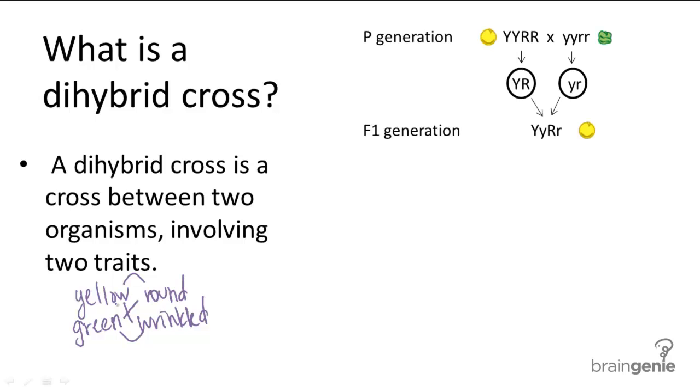Here are Mendel's peas. Mendel began with a homozygous dominant and a homozygous recessive individual in the parent generation. For these two individuals, there are only one gamete combination per individual. Here the only gamete combination is yellow round, and here the only gamete combination is green wrinkled. That makes sense because those are the only two alleles present in the genotypes.